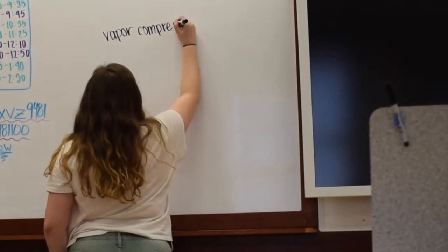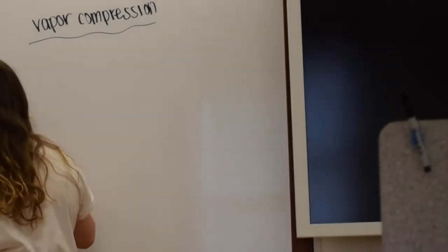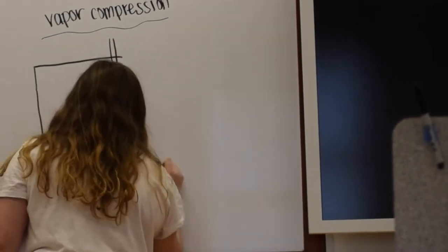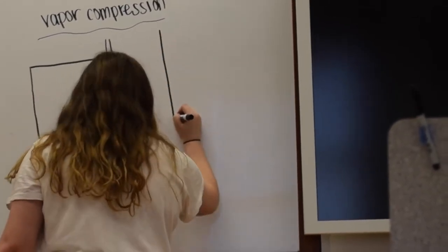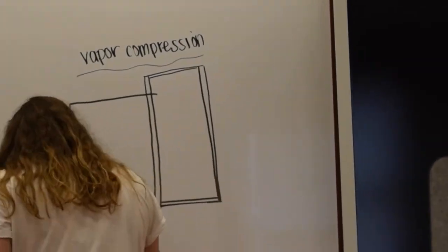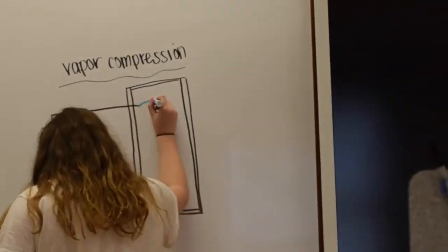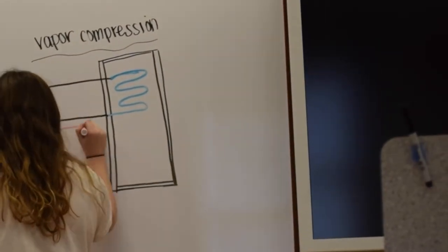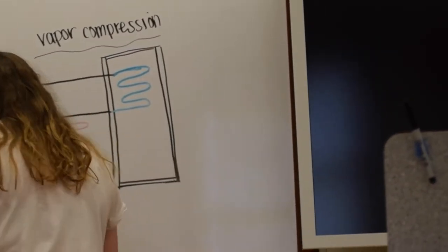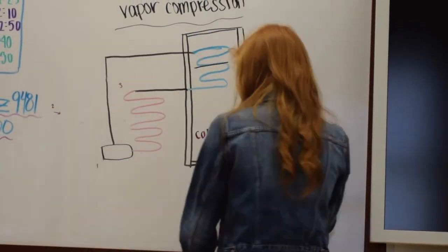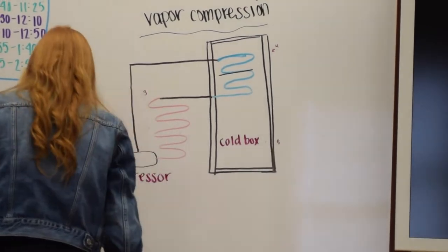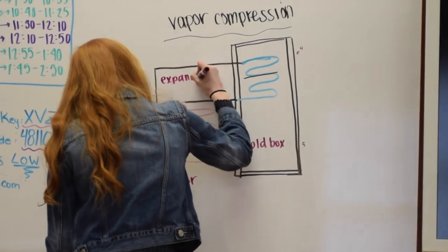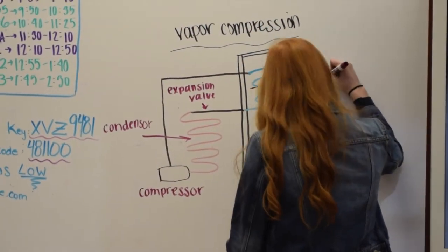Outlined here is a basic diagram of the different parts of the refrigerator that help it do its job. The main parts of this appliance are the cold box, the compressor, the condenser, the expansion valve, and lastly the evaporator. All five of these things are crucial to the overall function of the refrigerator.